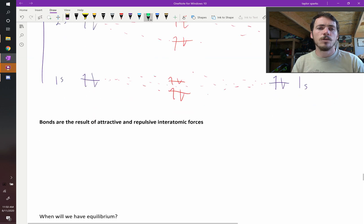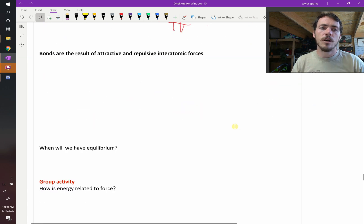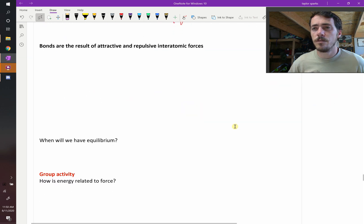So bonds are the result of attractive and repulsive interatomic forces. First off, what on earth is the force that's drawing things together? Well, if you take introductory physics, you learned about static coulombic attraction. What is coulombic attraction?